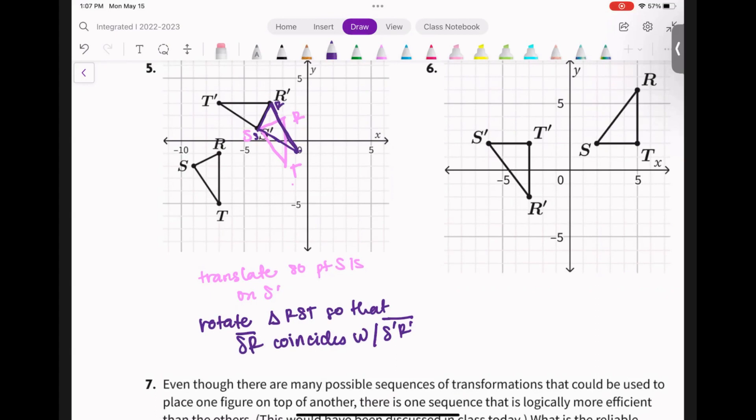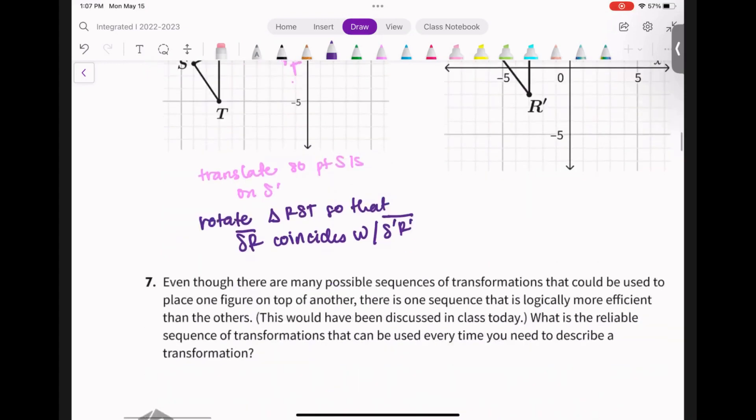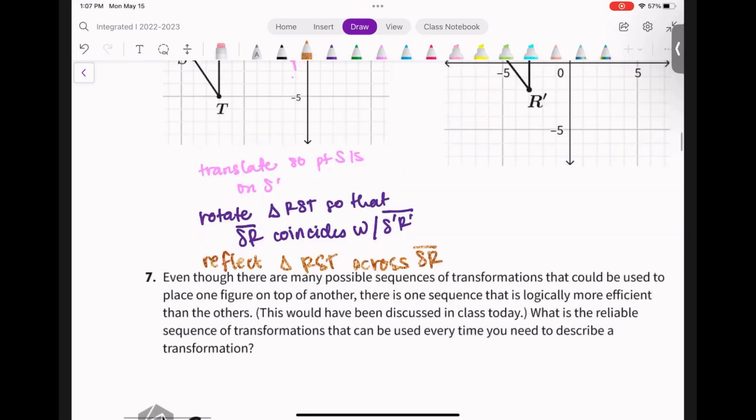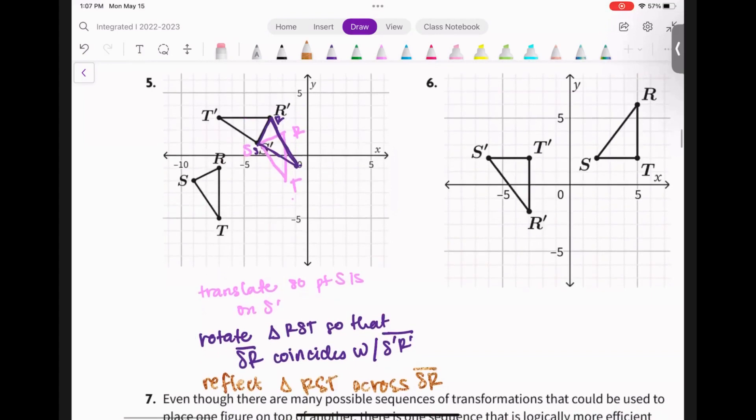So what's my last step? What is my last step going to be? Yeah, very good. Reflect. I'm going to reflect triangle RST across, hold on, SR. Right, so now it's just going to go reflection and then it's going to look like this.